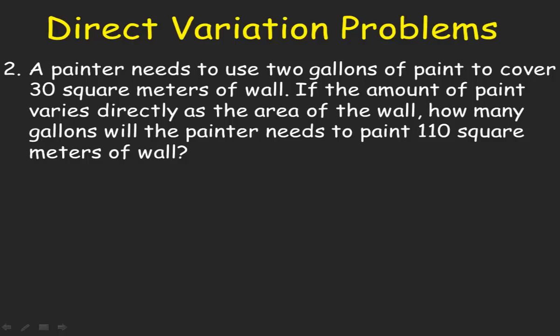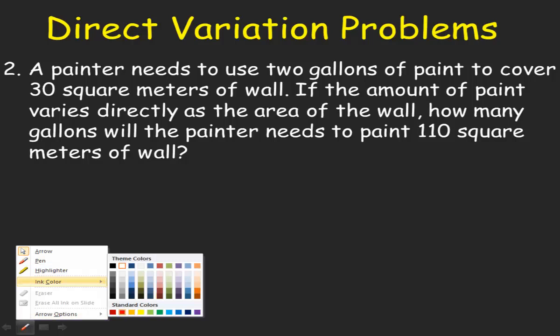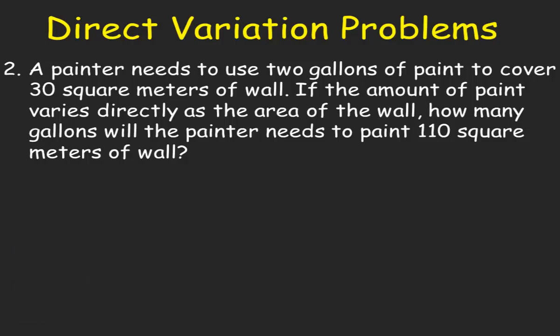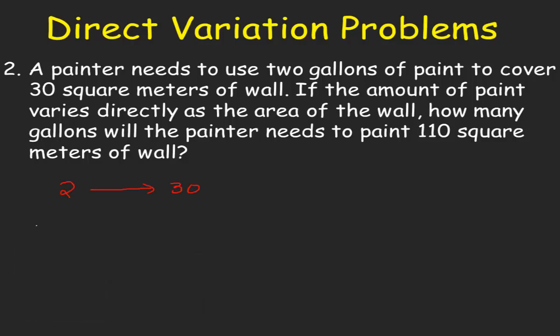Number 2. A painter needs 2 gallons of paint to cover 30 square meters of wall. If the amount of paint varies directly as the area of the wall, how many gallons will the painter need to paint 110 square meters of wall? So 2 gallons is to 30 square meters. Our direct variation equation will be 2 is equal to k multiplied by 30.